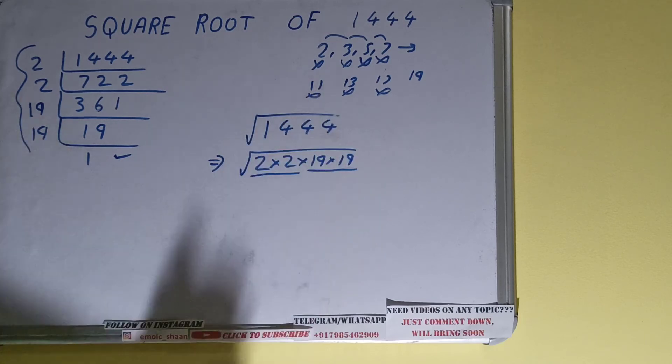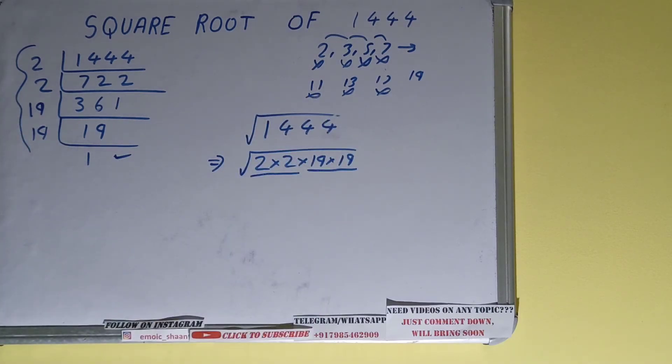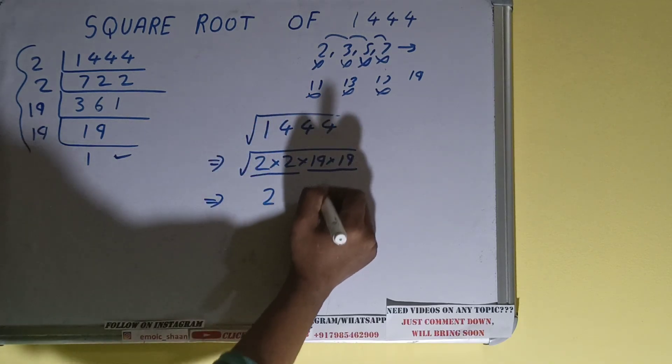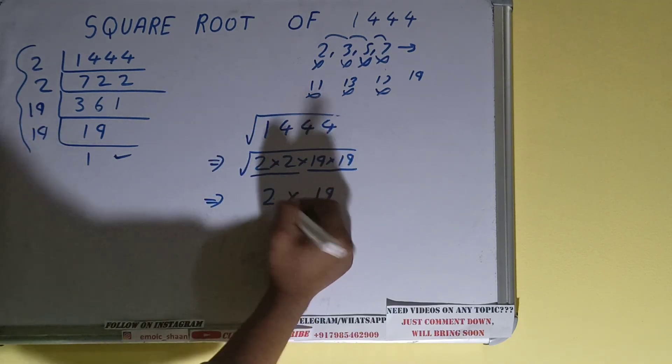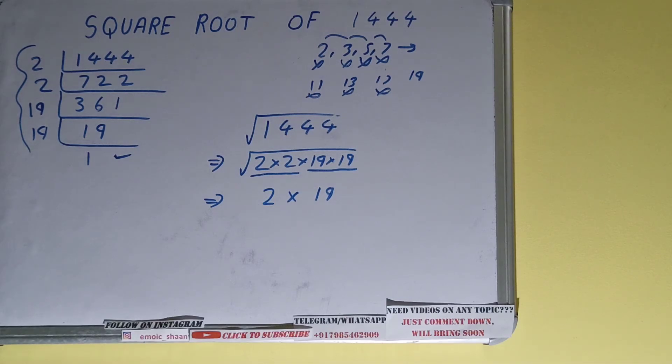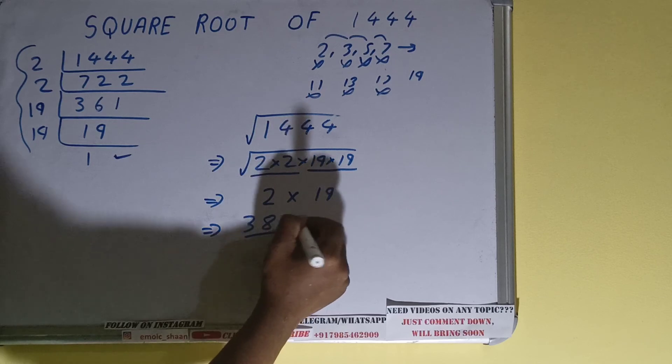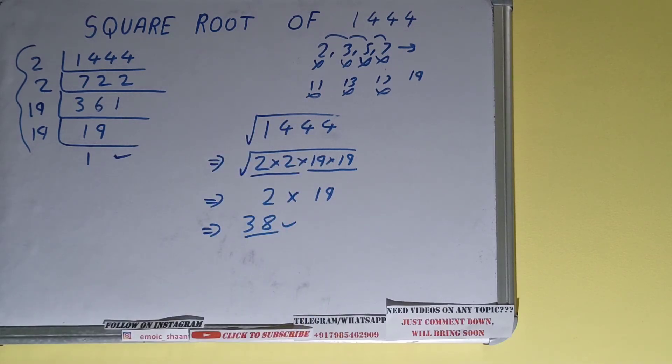So for each pair, write its number. This is a pair of 2, so write 2. This is a pair of 19, so write 19. In between is multiplication, so multiply: you'll be having the answer is 38. That's it. So this is all about the square root of 1444.